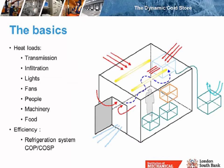I'd like to start with some of the basics, because I think some of this is quite important to understand. If you have a cold store like the diagram on the right, you're going to have a number of heat loads. These can come from transmission — the heat load across the insulation — from infiltration through doorways or gaps in the insulation, from lights, fans, people going into the store, machinery such as forklifts, and even the food itself if loaded above the store temperature. Things like transmission are related to location, orientation, and insulation thickness.